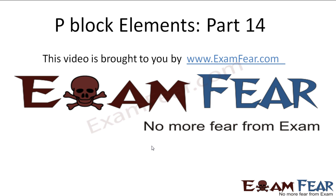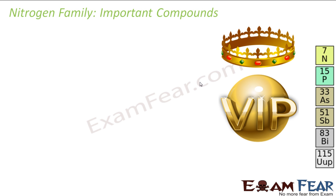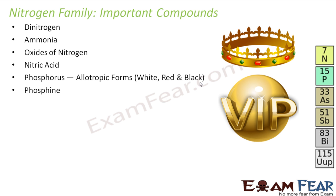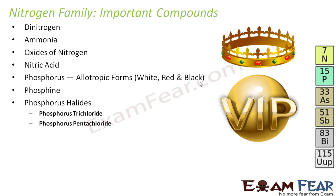Hello friends, this video on P-Block Elements part 14 is brought to you by examfea.com — no more fear from exam. Now let's talk about some important compounds of the Nitrogen family: Dinitrogen (N2), Ammonia, Oxides of Nitrogen, Nitric Acid, Phosphorus (including its allotropic forms — White, Red, and Black Phosphorus), Phosphine, Phosphorus Halides (PCl3 and PCl5), and Oxo acids of Phosphorus.